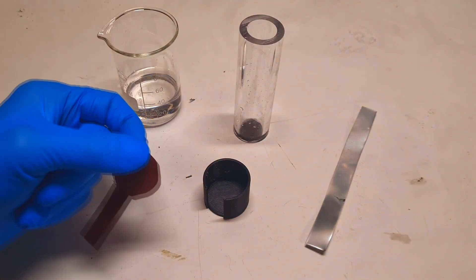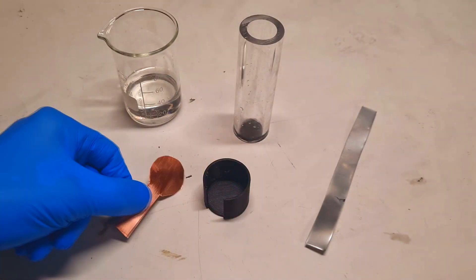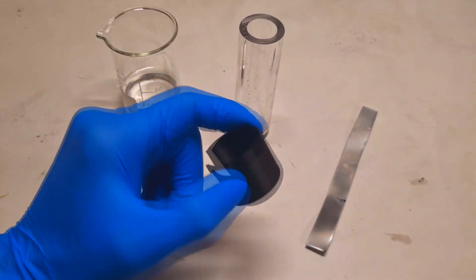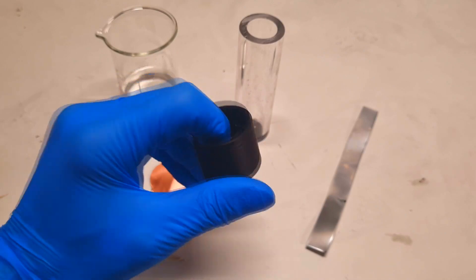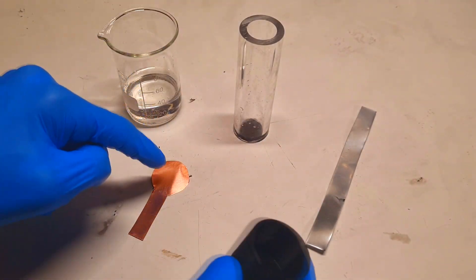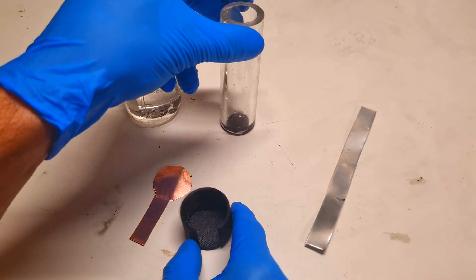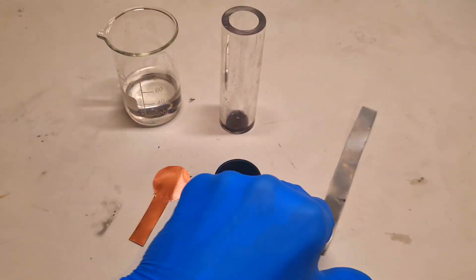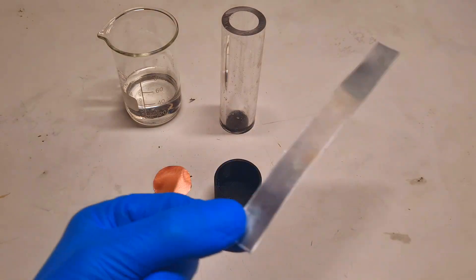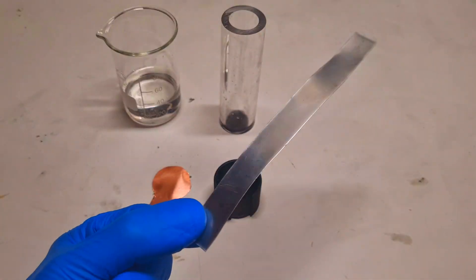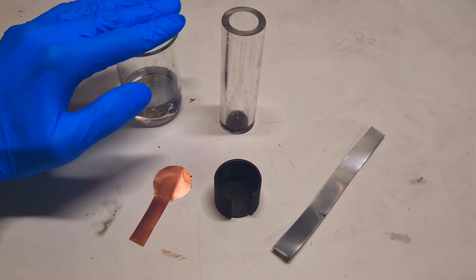Then I have the positive current collector which is made from copper. Here I printed myself this holder which will hold this copper to this tube. Then the negative electrode is simply made with some zinc electrode.